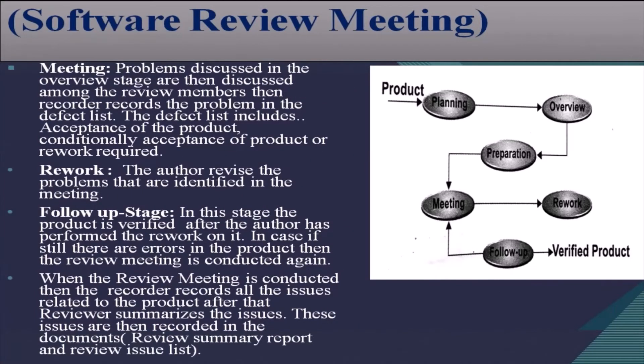The next stage is the meeting stage. The problems discussed in the overview stage are then discussed among the review members. The recorder records the problems in the defect list. The defect list includes the acceptance of the product and a decision on whether rework is required or not.